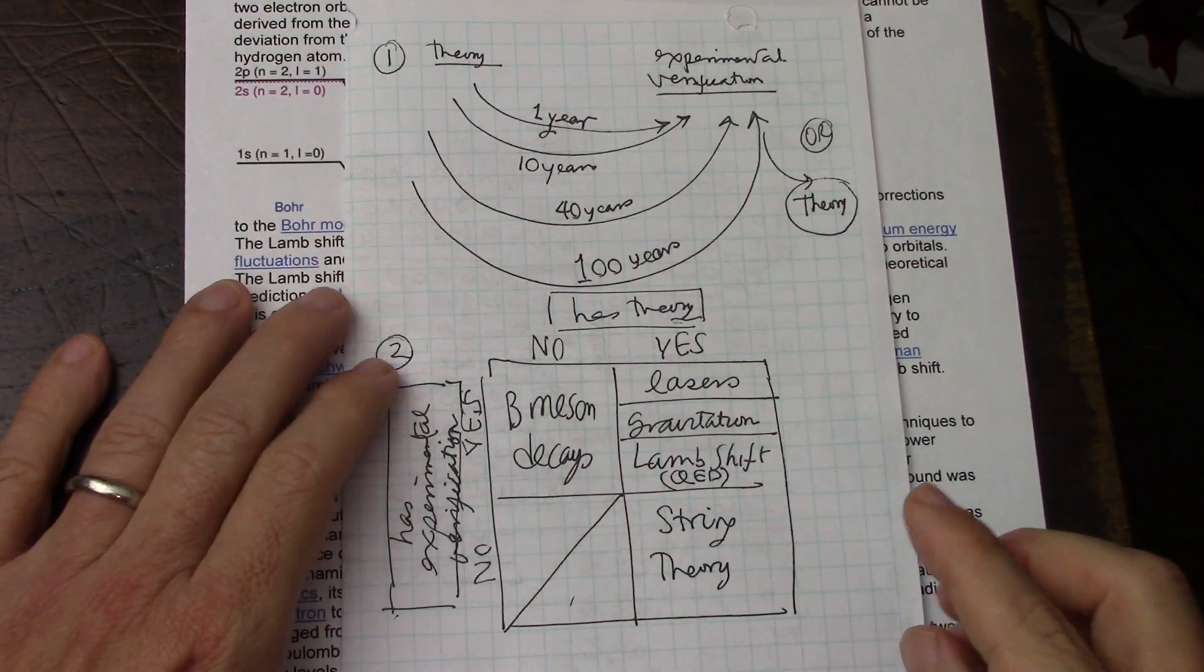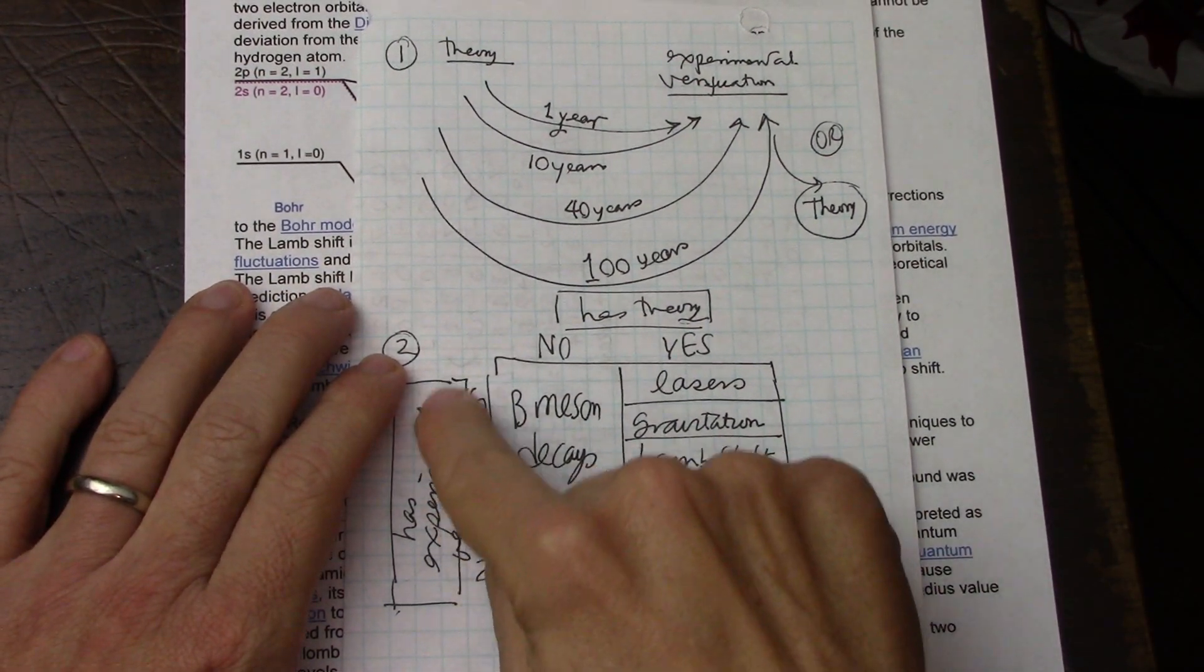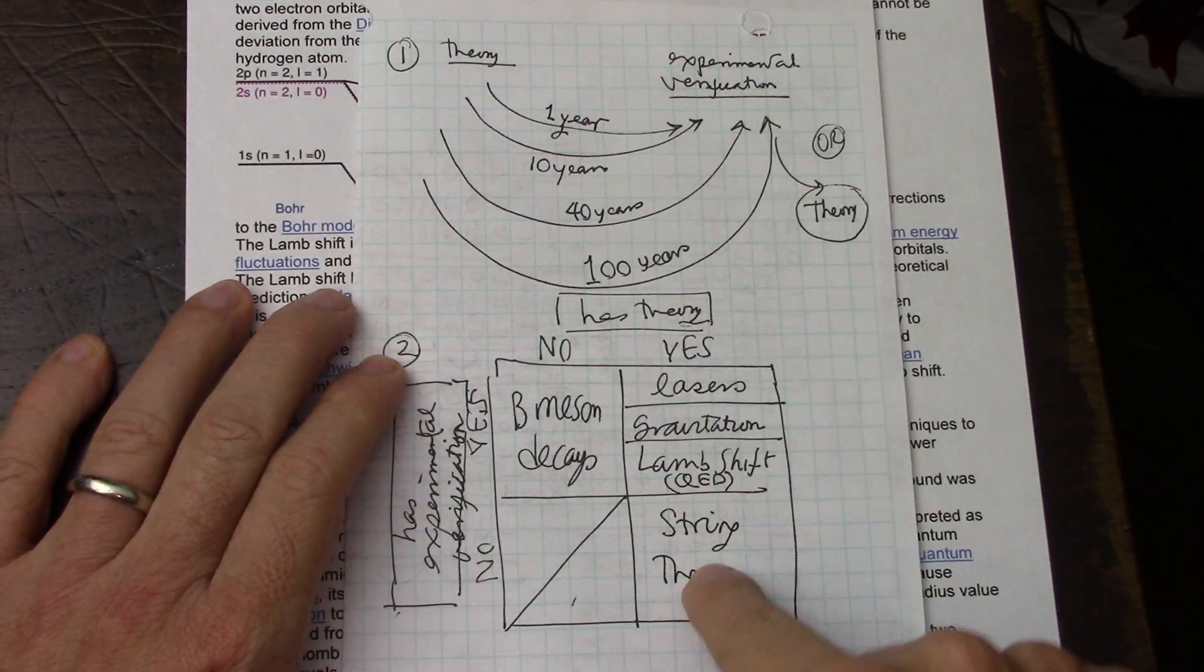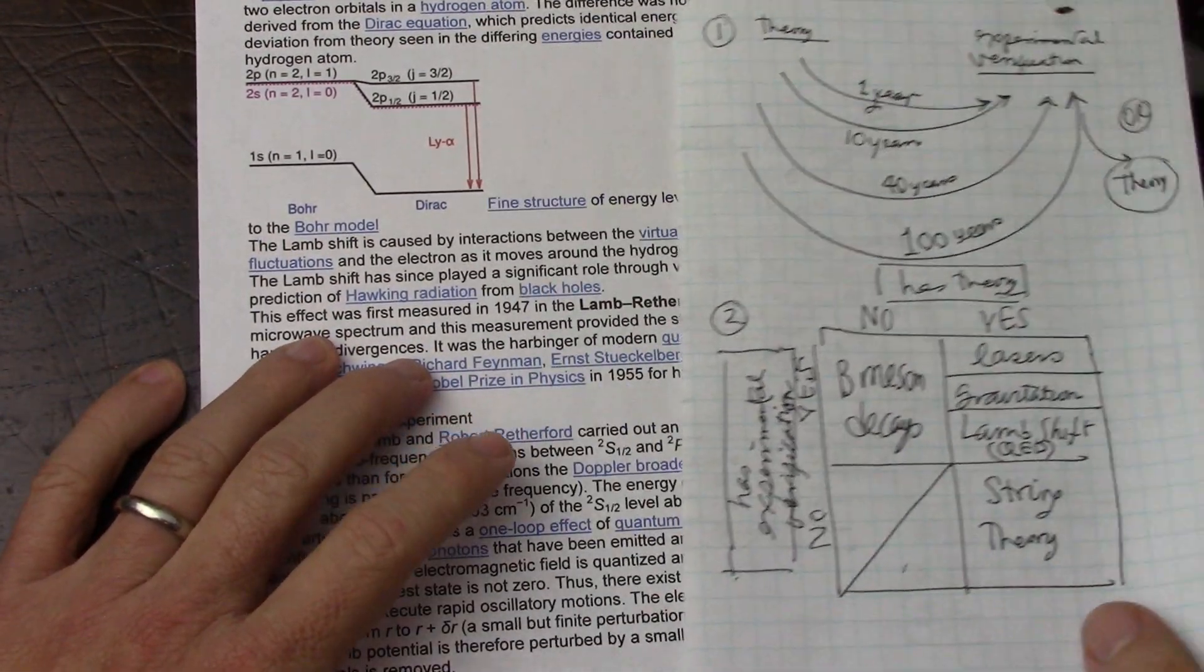So there are cases even where there is an experimental measurement, and then theory happens. But string theory is in this unlucky corner, from what I've seen, where there is no experimental verification, and there is theory. Just comparing it to other fields.